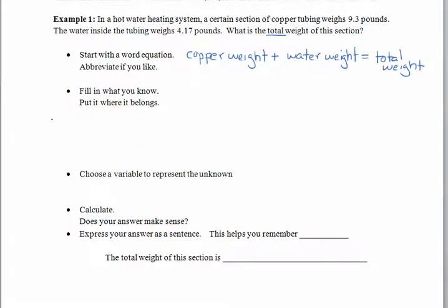Okay, so let's see, what do we know? We know some things about the copper weight. Happens to be 9.3 pounds. Always a good idea to write down what you know and what you don't know. Now, we know that the water weight is equal to 4.17 pounds.